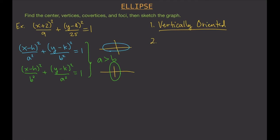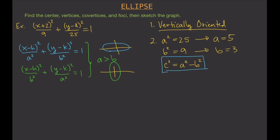The values of a and b: a² = 25 gives us a = 5, and b² = 9 gives us b = 3. We can also find c using the formula c² = a² − b². This is not the Pythagorean theorem — it is simply a defined formula for c. Substituting: c² = 25 − 9 = 16, so c = 4.